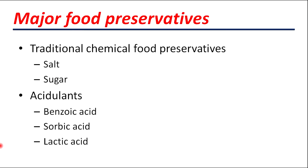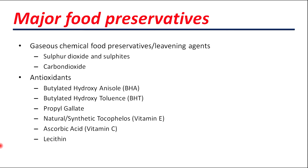There are different categories of chemical food preservatives. The first is traditional chemical food preservatives — salt and sugar — which can be added in bulk into foods. The second category is acidulents, such as benzoic acid, sorbic acid, and lactic acid. There are also gaseous chemical food preservatives or leavening agents such as sulfur dioxide, sulfites, and carbon dioxide. In addition, antioxidants such as BHA, BHT, propyl gallate, vitamin E, vitamin C, and lecithin can also act as chemical preservatives in food processing technology.